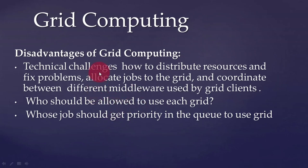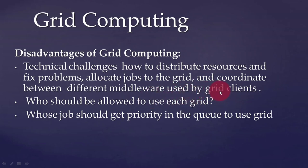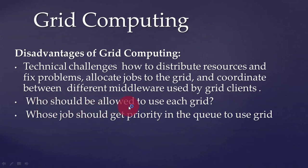Disadvantages of grid computing include technical challenges such as: how to distribute resources and fix problems, how to allocate jobs to nodes, and how to coordinate between different middleware used by different grid clients. Since different types of grids use different software, coordinating between different middleware makes it difficult. Another disadvantage is deciding who should be allowed to use each grid, and whose job should get priority in the queue.